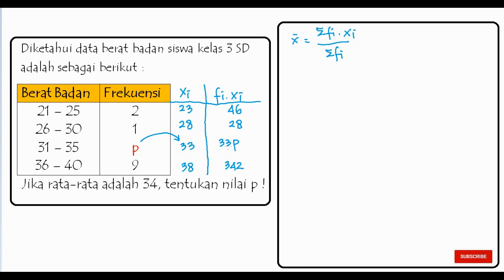Setelah ini masukkan ke dalam rumus. Ingat rumusnya, X-bar atau rata-rata sama dengan sigma FI kalikan dengan XI per sigma FI. Berarti sekarang diketahui, rata-ratanya diketahui di sini. Ini rata-rata atau X-bar itu sama dengan 34. Jadi, 34 sama dengan jumlah frekuensi kalikan dengan XI. Ini dijumlahkan, ada ini-nya, ada P-nya. Tulis saja di sini. Berarti 46 ditambah 28 ditambah 33P ditambah 342 per jumlah dari frekuensi. Frekuensi jumlahkan juga. Berarti frekuensi pertamanya 2, jumlahkan 2 ditambah 1 ditambah P ditambah 9.